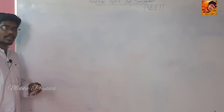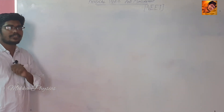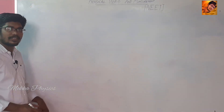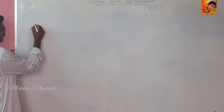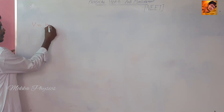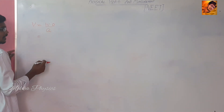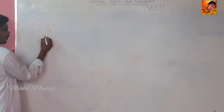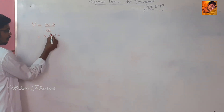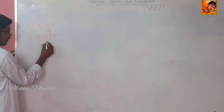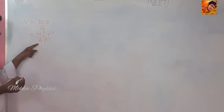Now you have four electrical quantities relevant to this dimension. It is not a direct question — you have to deal with dimensions. How to deal with the first one: voltage. This expression is work done by charge, and work done is force into displacement, then divide by charge.